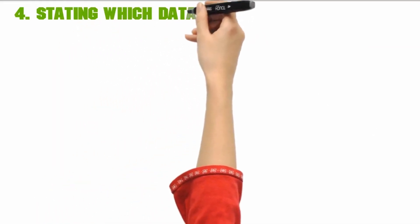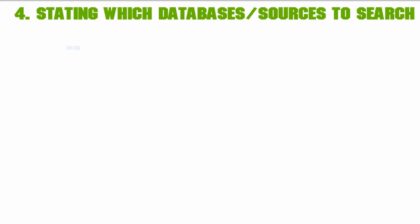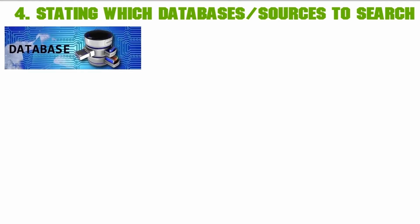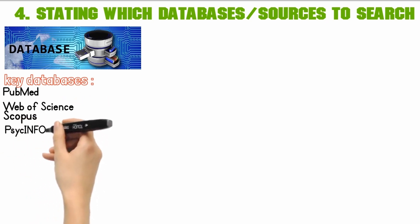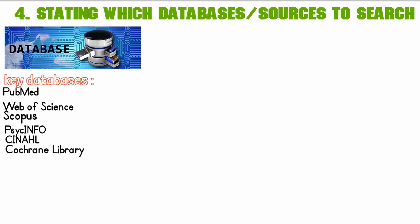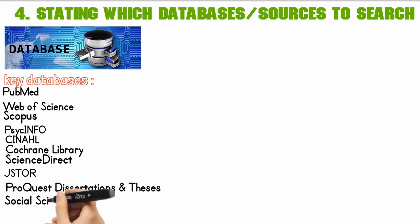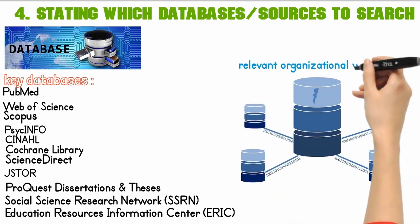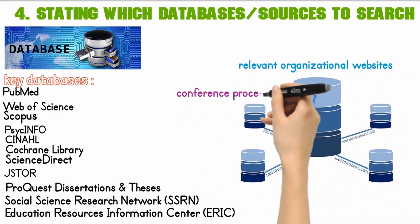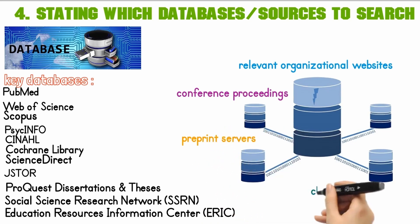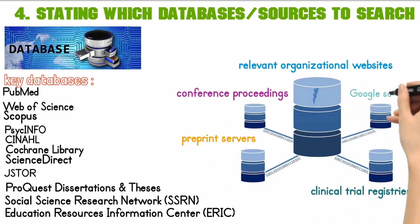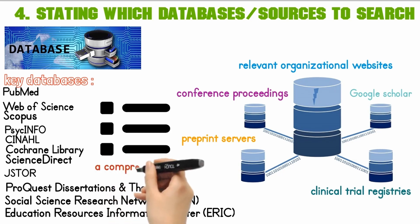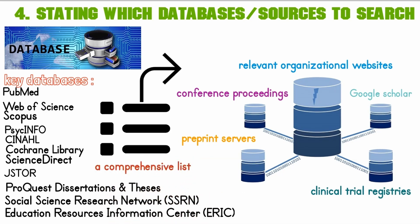Once you've got that covered, it's time to decide which databases or sources you'll search — the places where you'll find studies that meet your criteria. Some key databases to consider are PubMed, Web of Science, Scopus, PsycINFO, CINAHL, Cochrane Library, Science Direct, JSTOR, ProQuest Dissertations and Theses, Social Science Research Network (SSRN), and Education Resources Information Center (ERIC). Also include relevant organizational websites, conference proceedings, preprint servers, clinical trial registries, and custom Google Scholar searches. Make a comprehensive list of these sources to save time and ensure you don't miss important literature later.